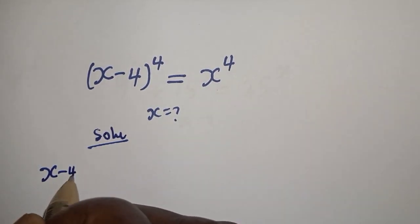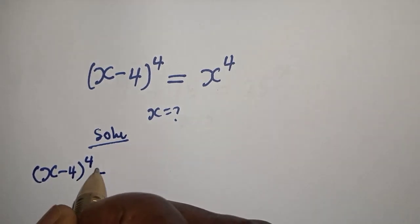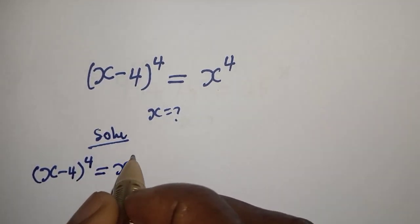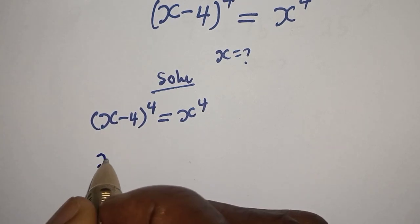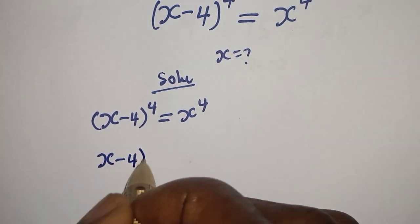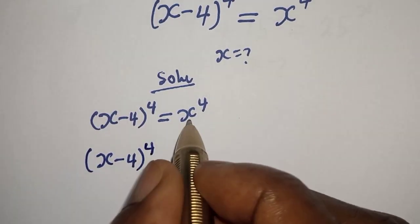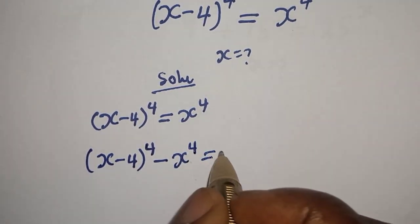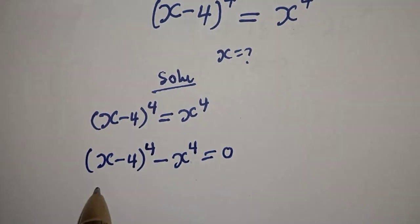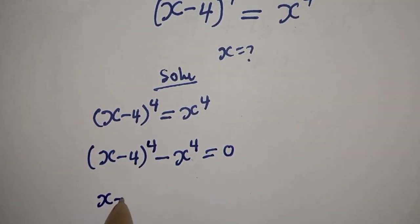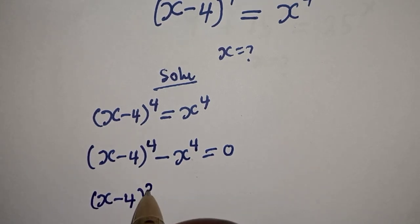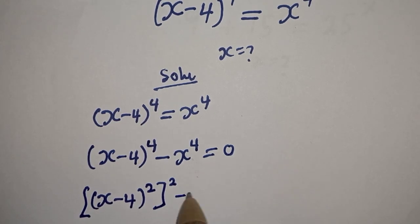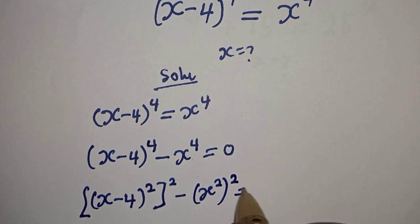S minus 4 raised to power 4 is equal to S raised to power 4. Then S minus 4 to the power of 4, if you bring this to this side, it becomes minus S to the power of 4 is equal to 0.